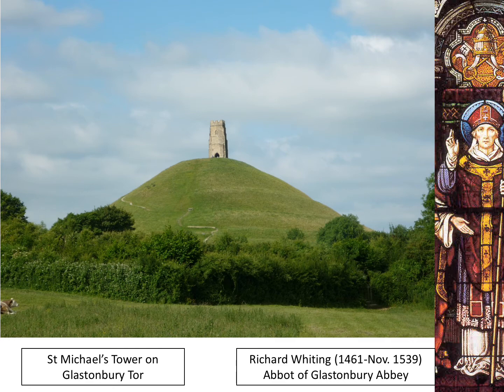On the slide you can probably see a place that's quite familiar to a lot of you — that's Glastonbury Tor. The Tor is the hill and on top of the hill we have St Michael's Tower. On the right hand side we have a stained glass window showing the abbot of Glastonbury Abbey, Richard Whiting, who was the abbot — the person in charge of that abbey — until 1539.